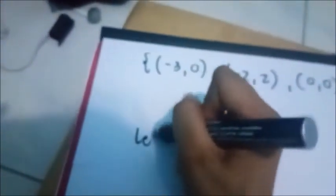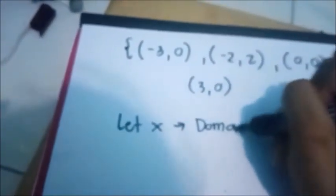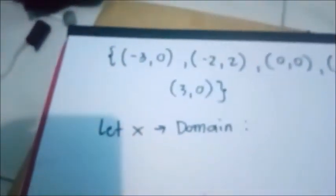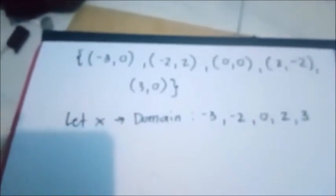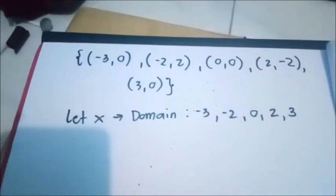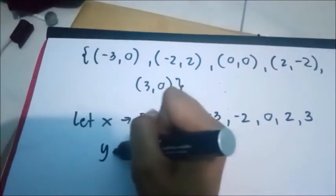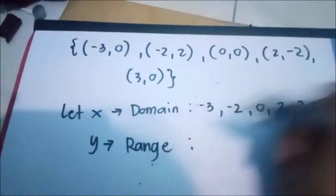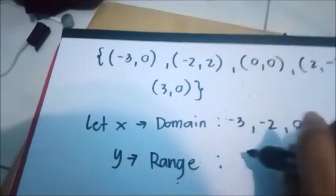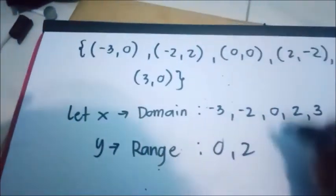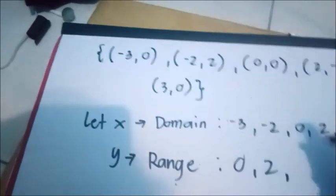Now, let X be the domain and determine all the domain values in the given ordered pairs. We have negative 3, negative 2, 0, 2, and 3. The domain values are the numbers in the first term. Then let us have the range. The range is all the numbers in the second term. So this will be 0, 2, 0, and negative 2.